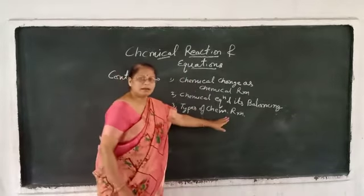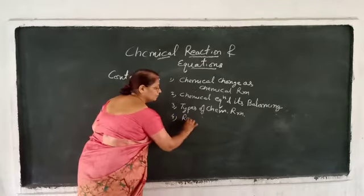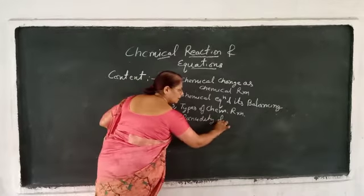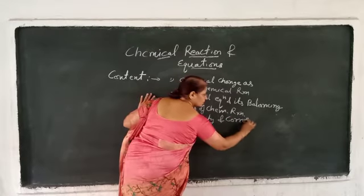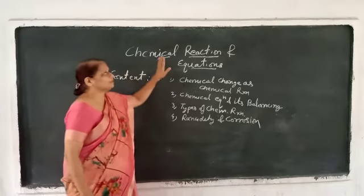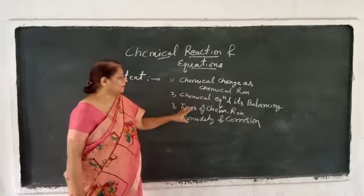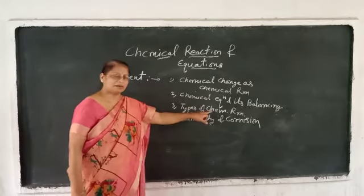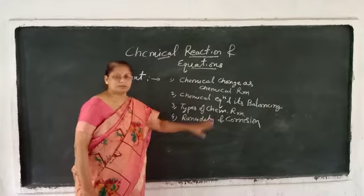Types of chemical reaction, and the last one is rancidity and corrosion. So the syllabus of this chapter is: chemical change as chemical reaction, chemical equation and its balancing, types of chemical reaction, and rancidity and corrosion.